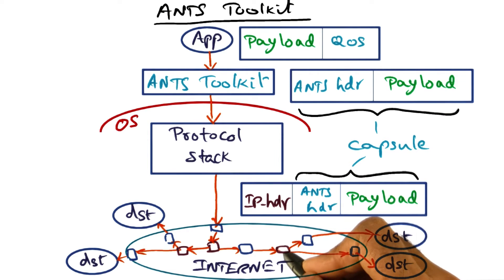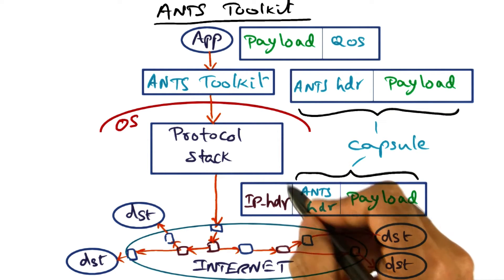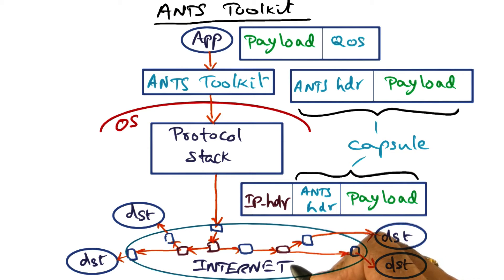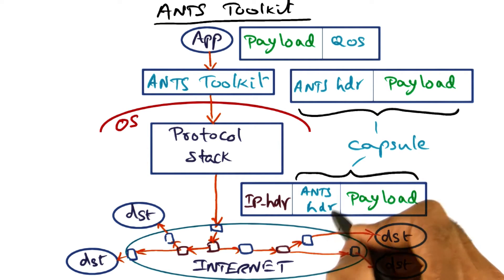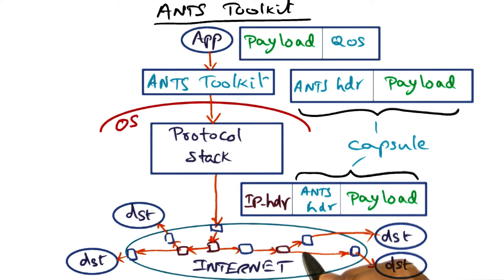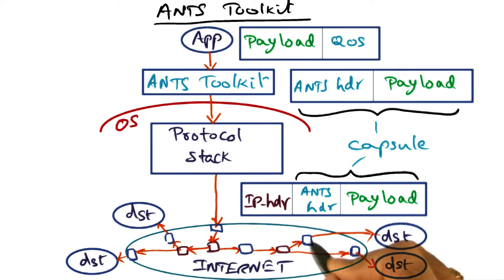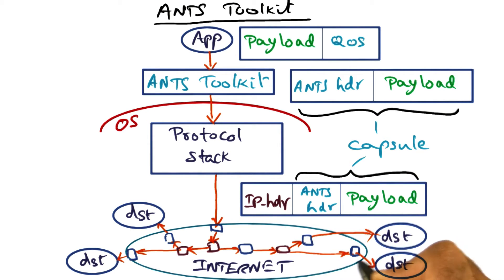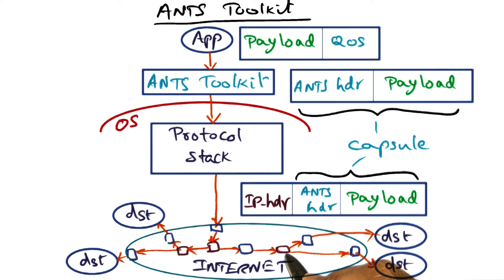On the other hand, if a node that receives this packet is an active node, then it can actually process the ANTS header and say: this particular packet needs to be demultiplexed and sent to two different routes, and it might take that intelligent routing decision based on the nature of that node.